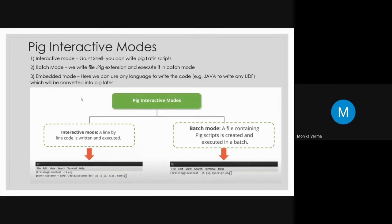There are three types of interactive modes, but majorly we use two. In interactive mode, you write code line by line — you type 'pig' and then enter the Grunt shell, where you give commands and get output. That is interactive mode. In batch mode, you provide a script file, and that script file executes line by line, giving you output after all lines are executed.